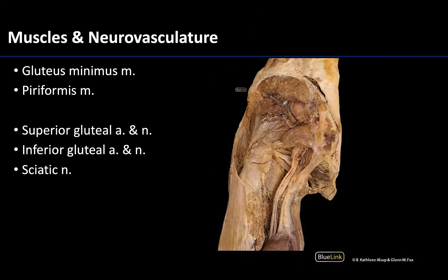In this deepest dissection, where both the gluteus maximus and medius have been removed, you can see the gluteus minimus — the tendon is visible here, along with a bit of its muscle belly on the posterior ilium, right on the bone. This is the smallest of the gluteal muscles, and you can see it distally heading toward the greater trochanter where it will have its distal attachment.